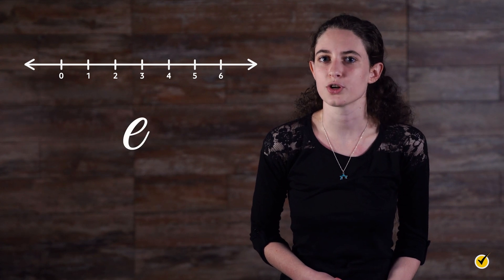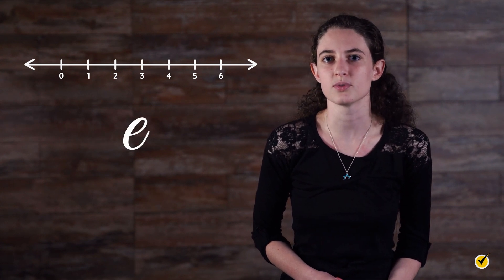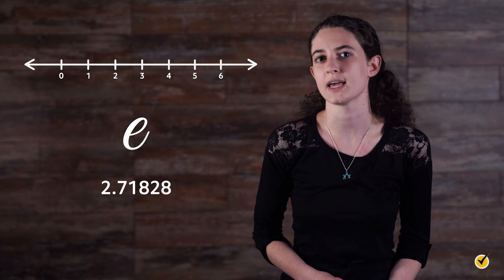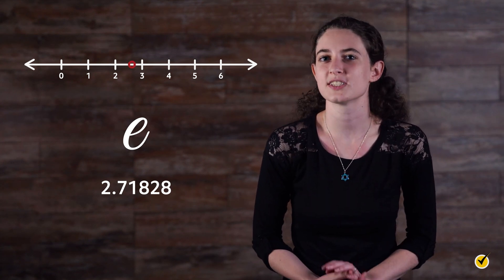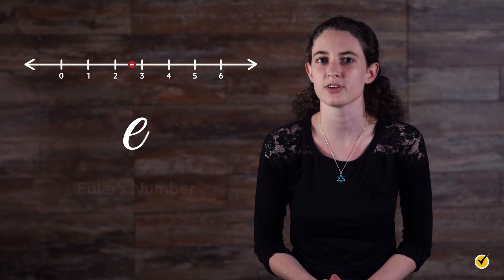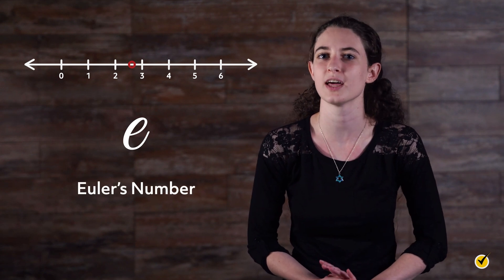The math constant e is seen frequently in math and is estimated with a value of 2.71828. This special irrational number is sometimes referred to as Euler's number, to credit the Swiss mathematician Leonard Euler.